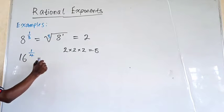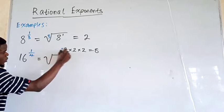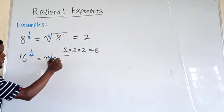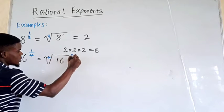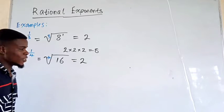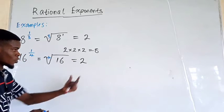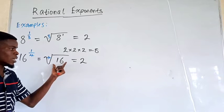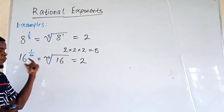This right here can be written as the fourth root of 16, which is just 2. How many repeated products are you going to get? 16. So it's going to be 4.